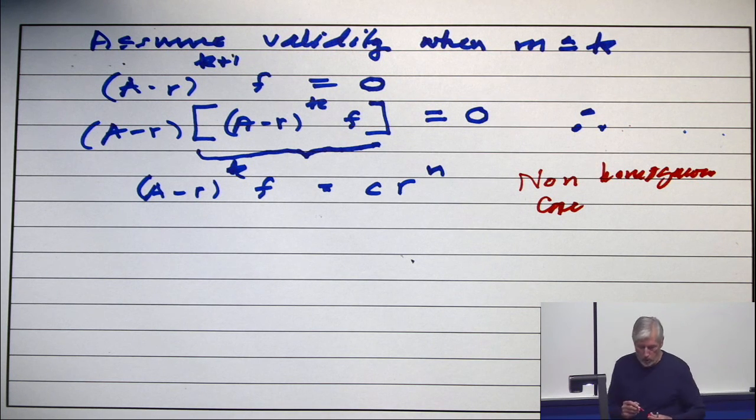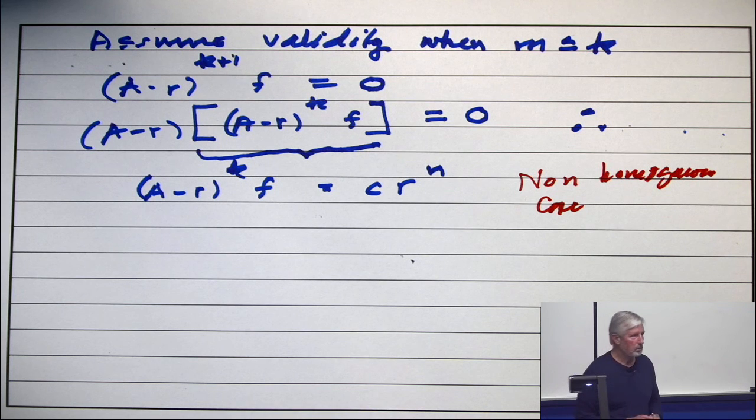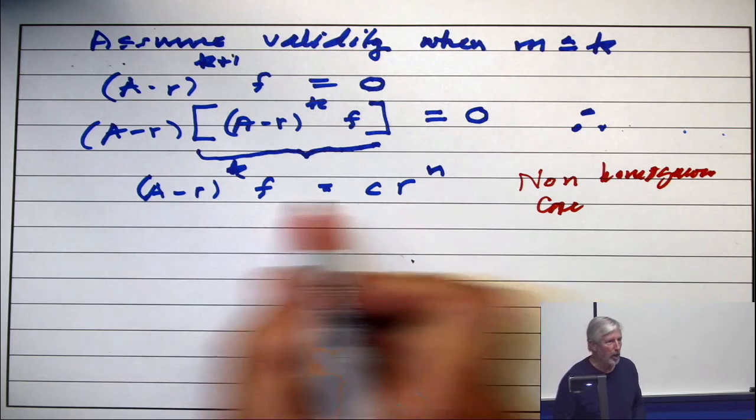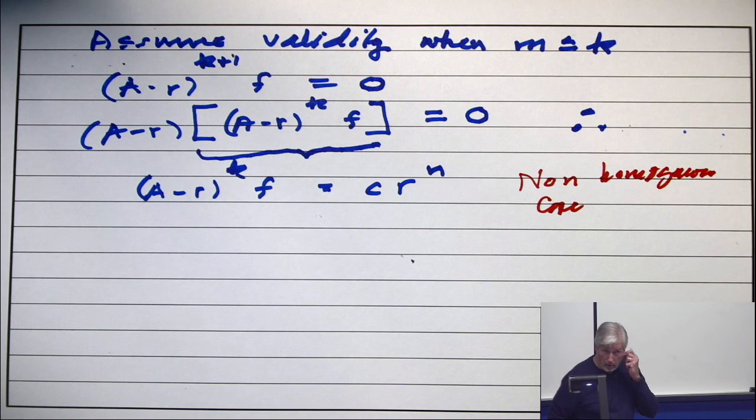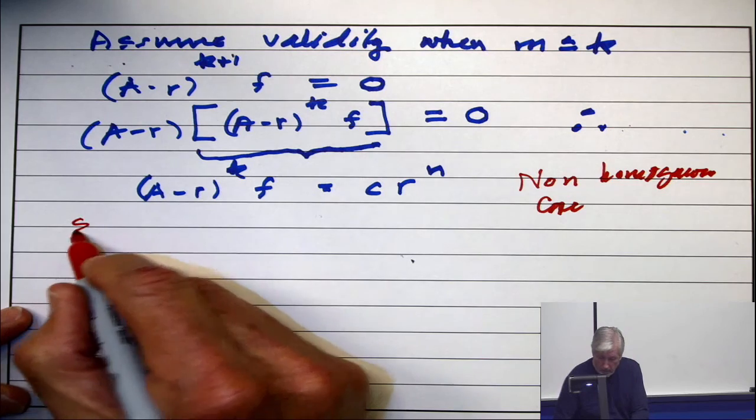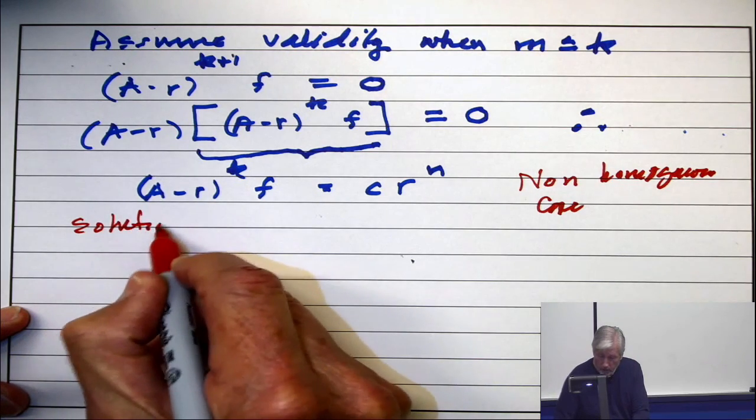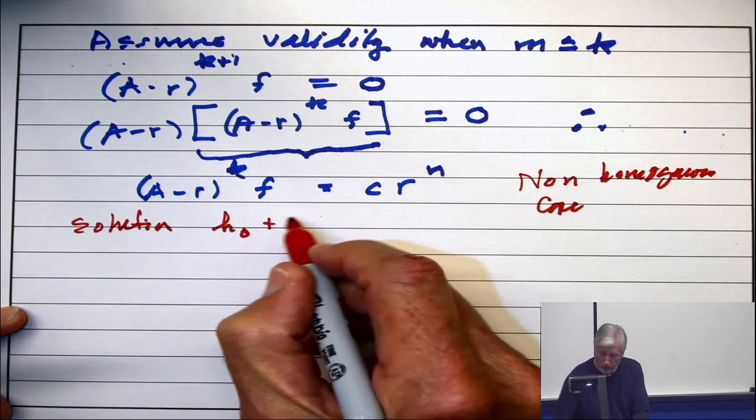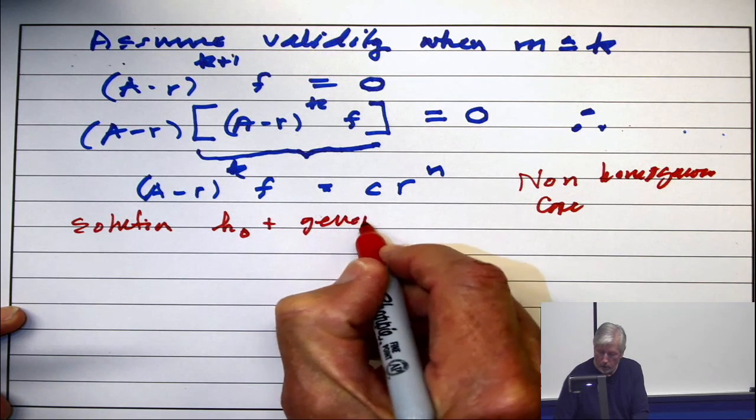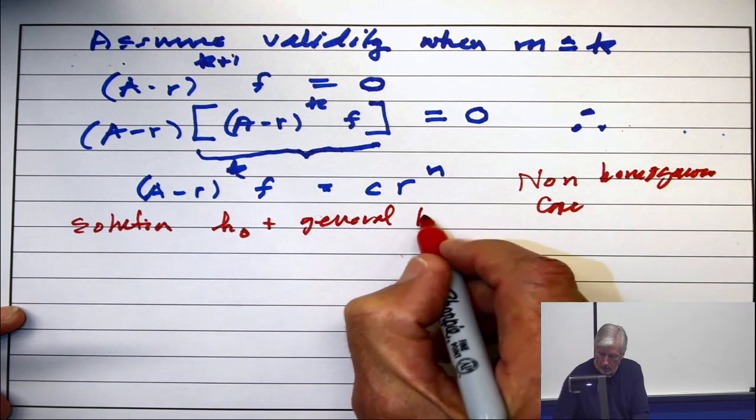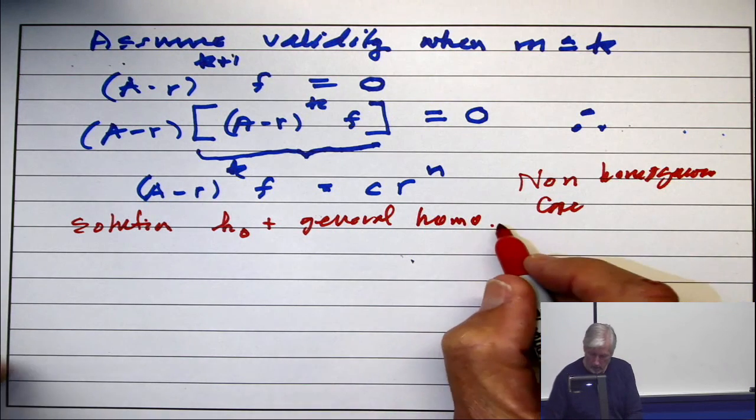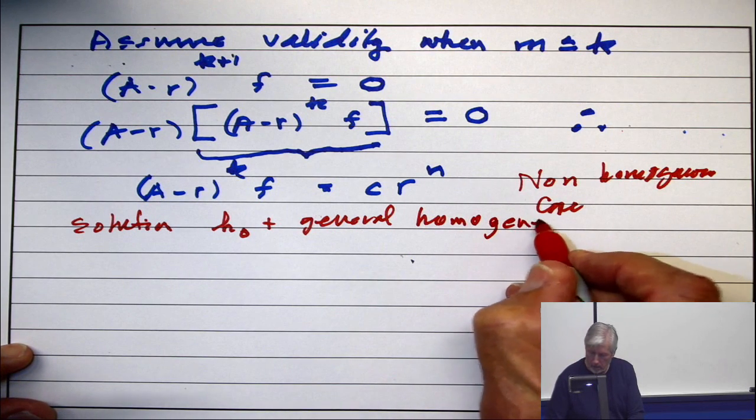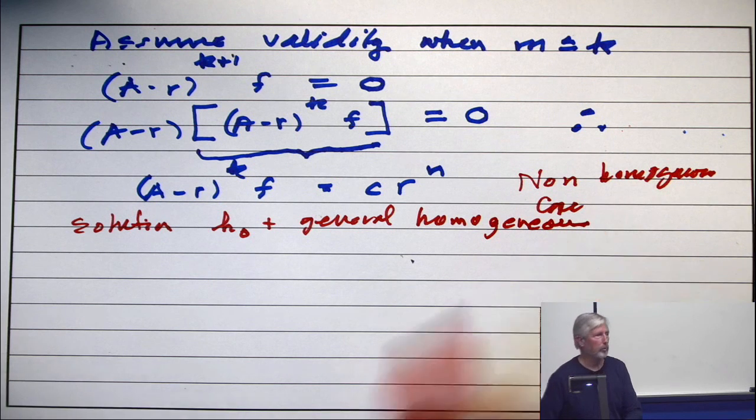Okay, but we use our theorem. And what is the solution to this non-homogeneous thing? The solution is a particular h₀ plus the general solution to the homogeneous. That's what our theorem says.